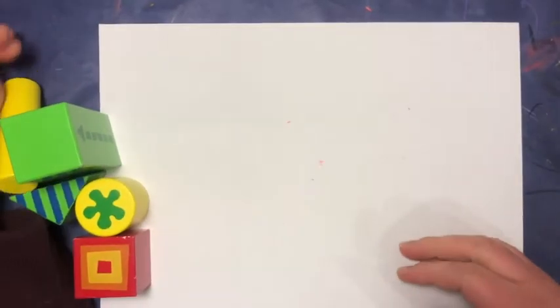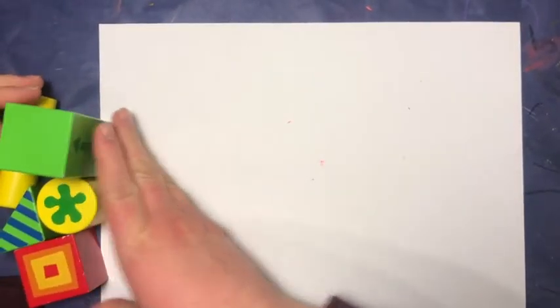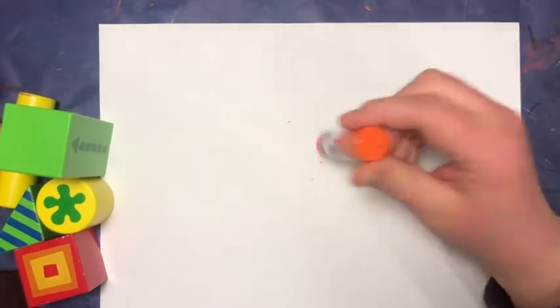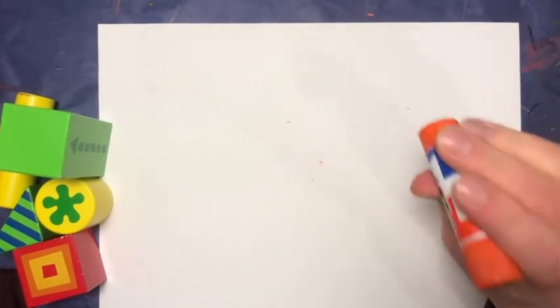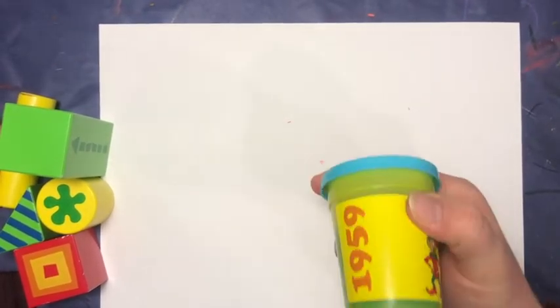You can also find forms that are everyday objects, like your glue stick is a cylinder. Here's another cylinder. Other things you could find...